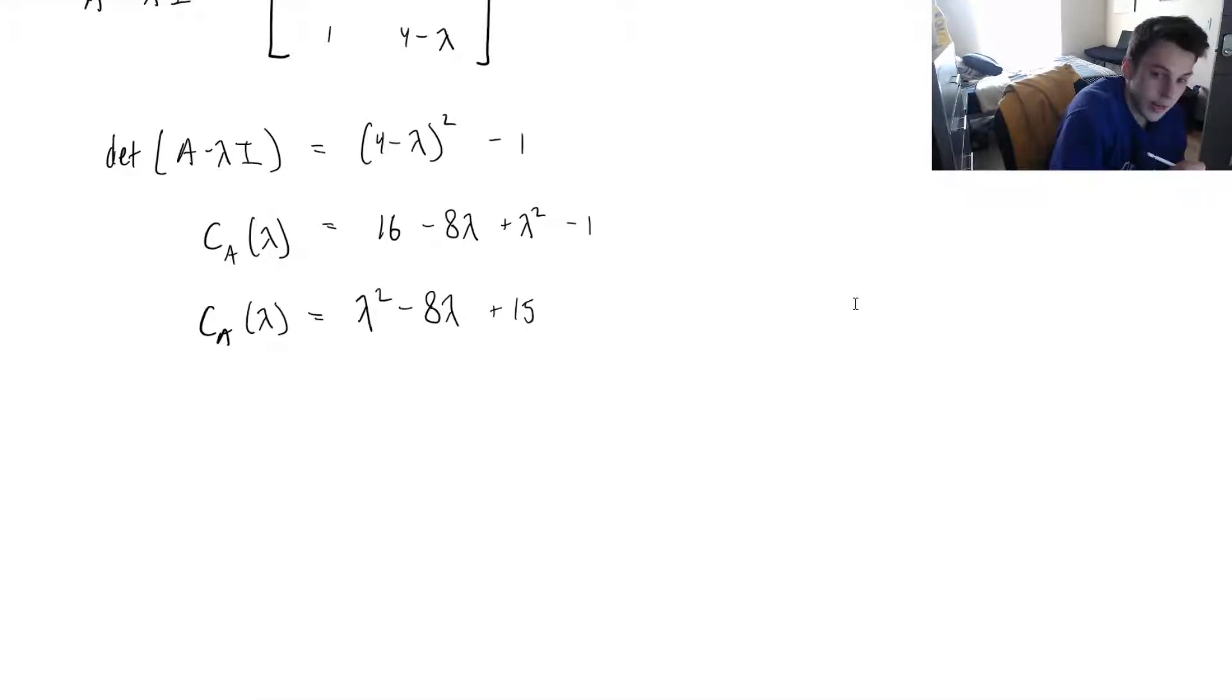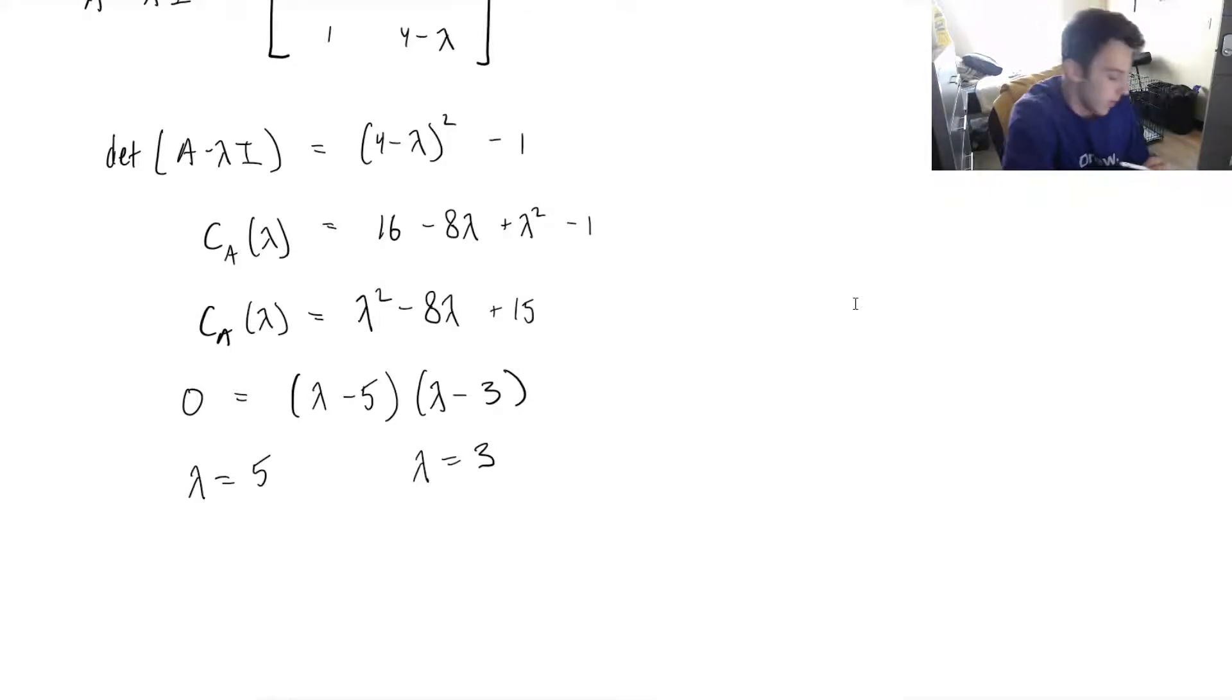So let's find our eigenvalues by setting this equal to 0. We get 0 equals, and what adds to negative 8, multiplies to positive 15? That's going to be minus 5 and minus 3. So we get lambda minus 5 and lambda minus 3. So we have two roots here, lambda equals 5 and lambda equals 3. These are our eigenvalues.